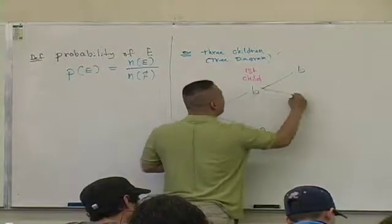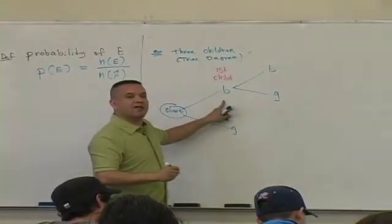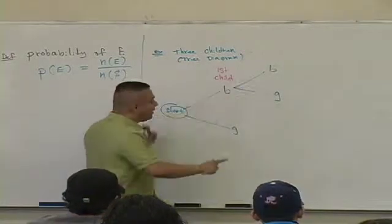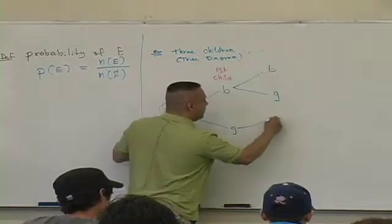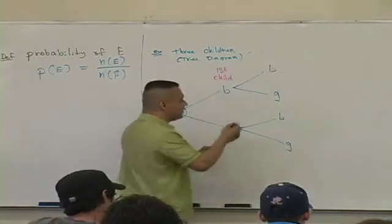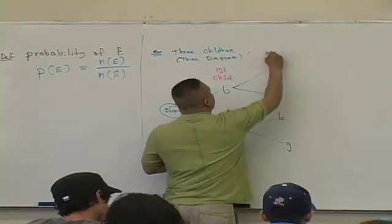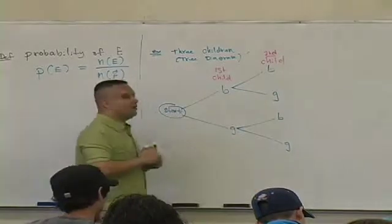So if you have a boy first, now you can have the second child either boy or girl again, is that right? Or if you had a girl first, you have your second child, what can you have? A boy or a girl again. So this set of outcomes corresponds to having the second child. You with that?